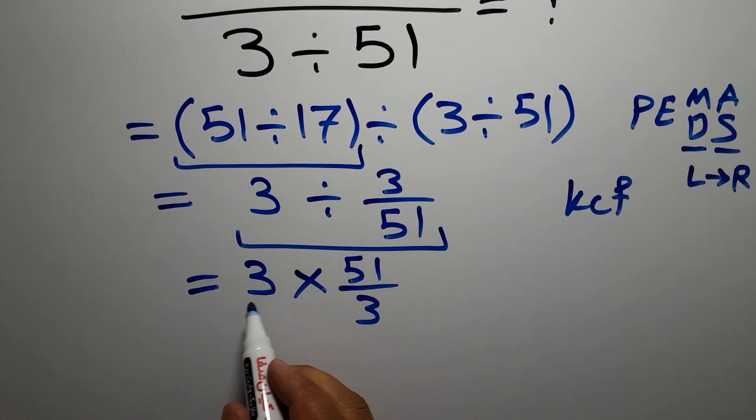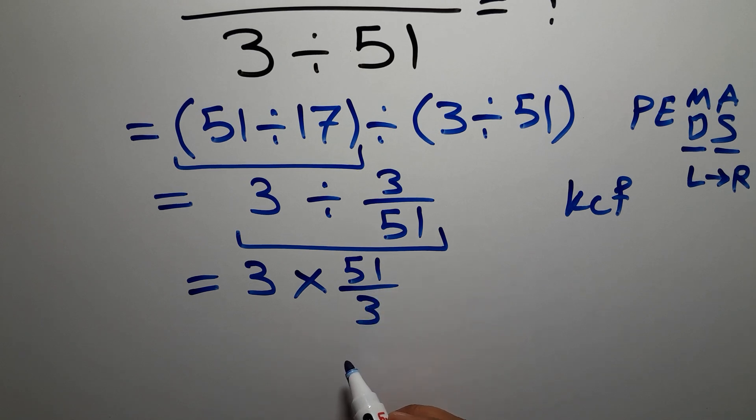We can easily cancel this 3 and this 3. So we have just 51, and this is our final answer to this problem.